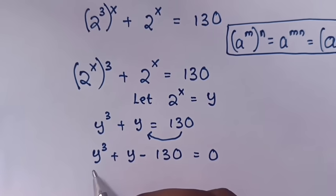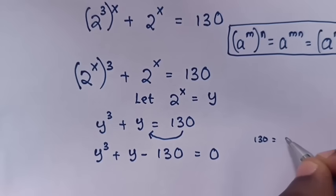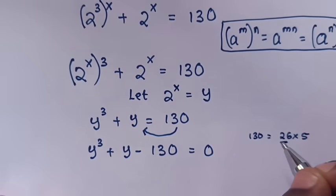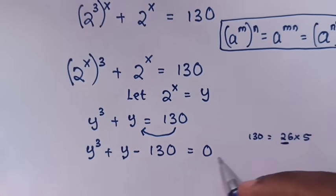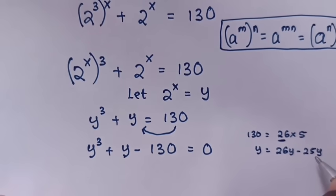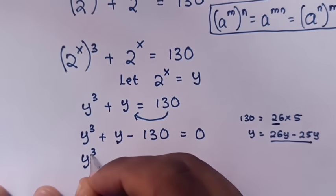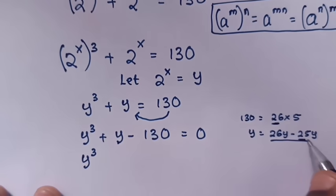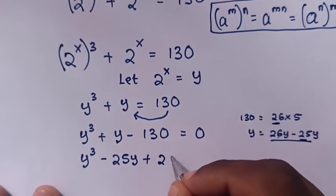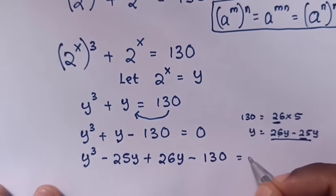Now this equation we will factorize. From here, 130 is same as 26 times 5, so we will use 26. To get y, it means y is equals to 26y minus 25y. We substitute 26y minus 25y here into y, so it will be y power 3 minus 25y plus 26y minus 130 is equals to 0.